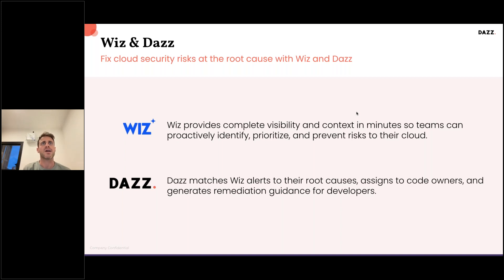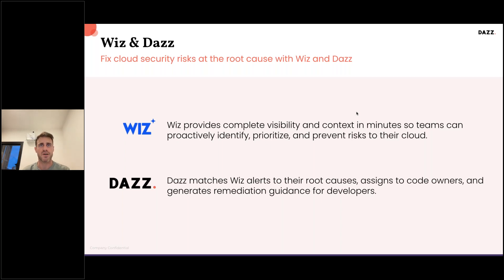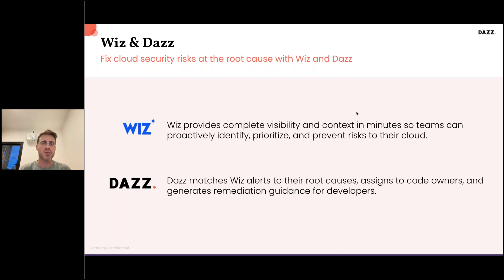WIS provides complete visibility and context in minutes to security teams, who can predictably identify, prioritize, and prevent risk to their cloud. Using the WIS platform, they can see misconfigurations and other cloud vulnerabilities. DAZ takes that and matches WIS alerts, issues, and policies to the root causes. Basically, we're helping to assign code owners and code committers, and generating remediation guidance for developers — giving security teams the context of who to contact and who owns the issue on the development side.